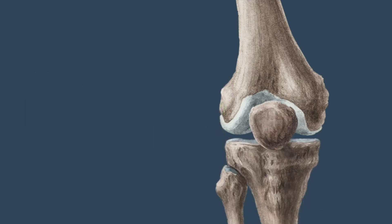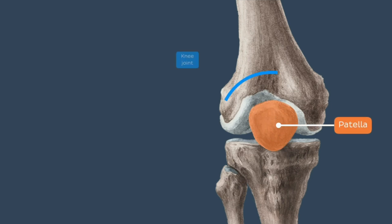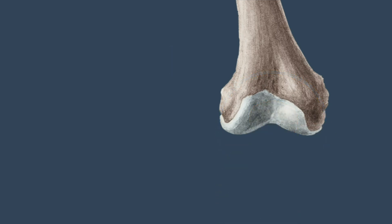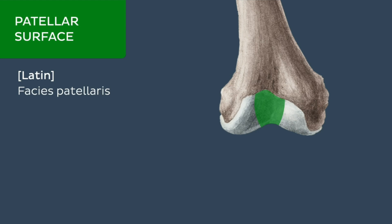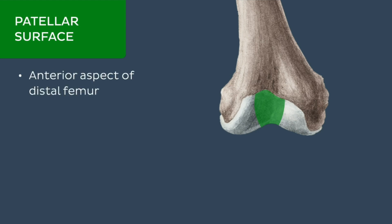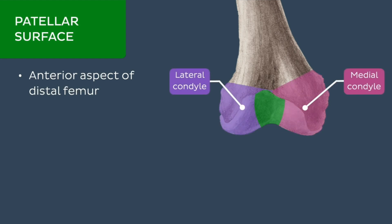The distal portion of the femur also articulates with the patella, forming the patellofemoral joint, which completes the knee joint. The part of the femur that articulates with the patella is known as the patellar surface of the femur. It is a grooved area on the anterior aspect of the distal end of the femur, located between the articular surfaces of the medial and lateral condyles.